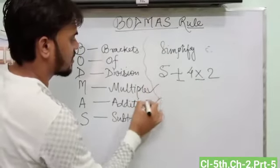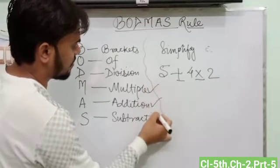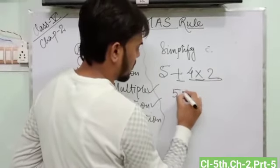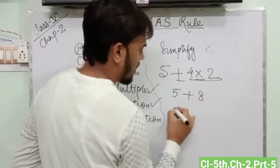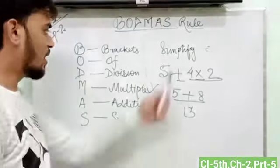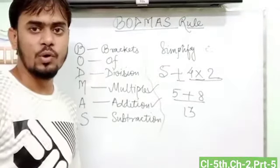So first of all, we have to do the multiplication. So 5 plus 4 into 2 is 8. And after that, we have to add 5 plus 8 equal to 13. So this is the order of rule of BODMAS.